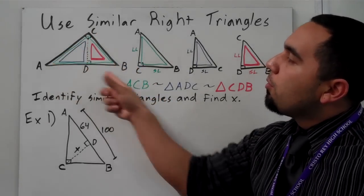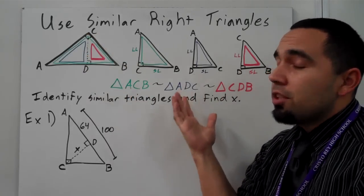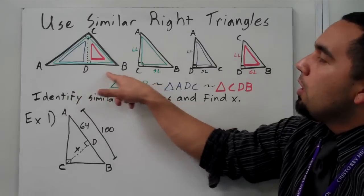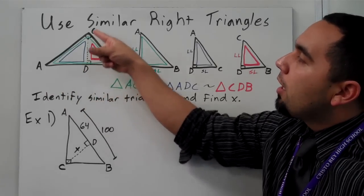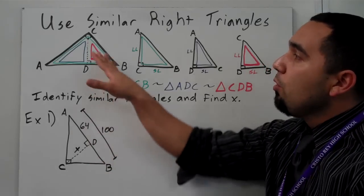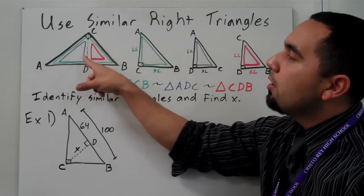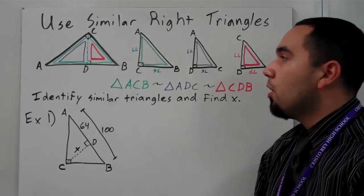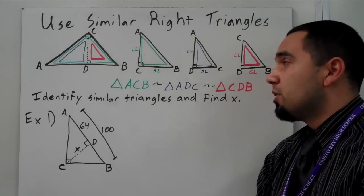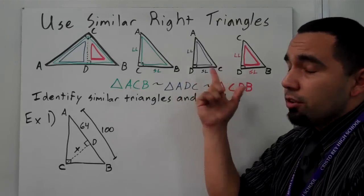First, we have right triangle ACB, and you can see the right angle there. What's interesting about right triangles is if you take the hypotenuse, which would be AB here, and you draw an altitude up to point C, what you get is three triangles — a smaller right triangle and a medium-sized right triangle. And what's interesting is that all three of them are similar, which goes back to Chapter 6 where we dealt with similar triangles, but these are similar right triangles.